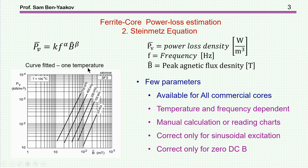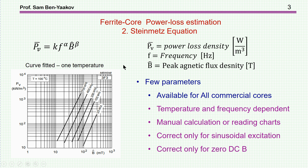The method used by power electronics engineers is based on the Steinmetz equation. This is the template of the Steinmetz equation: it is a constant times frequency to the power of alpha and magnetic flux density — this is the peak value of magnetic flux density — to the power of beta. Alpha, beta, and K are the constants of the Steinmetz equation, and they are actually fitted to data measured by the manufacturer. This information is now given as tables or in many cases as charts of this nature.